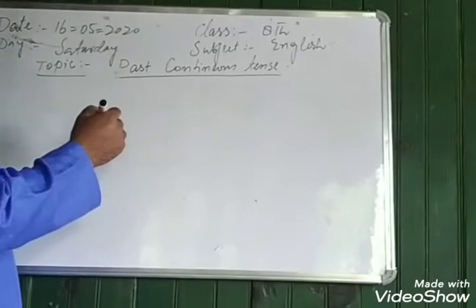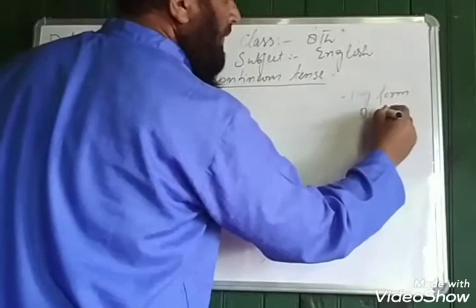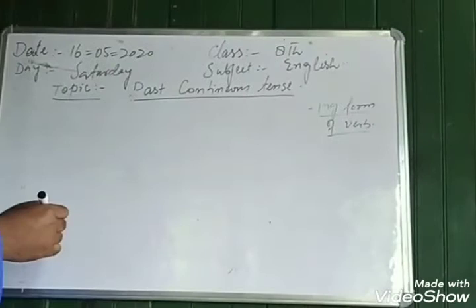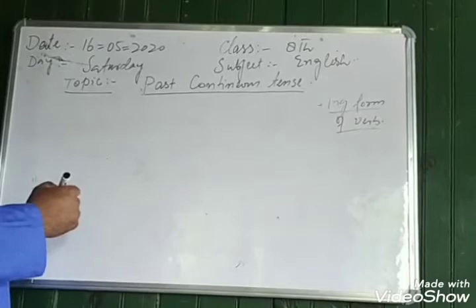I have told you one main thing: we must use the ING form of the verb. Later on I will make the construction — how can we make a past continuous tense?